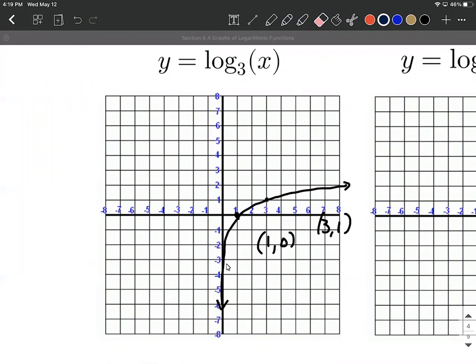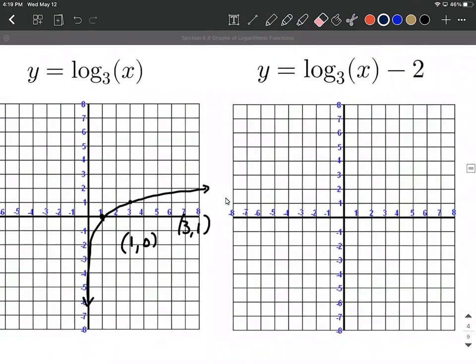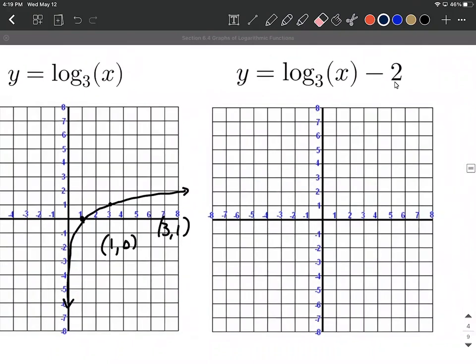This has a vertical asymptote going on at the y axis, so x equals 0. And let's use this and move things around based on this transformation of attaching a minus 2 to the entire function.